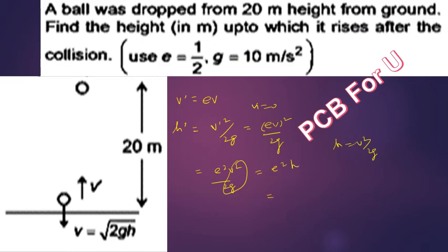With e equal to 0.5, that is 1 by 2, e squared equals 1 by 4. So the height is 1 by 4 times 20 meters, which gives 5 meters. Thank you.